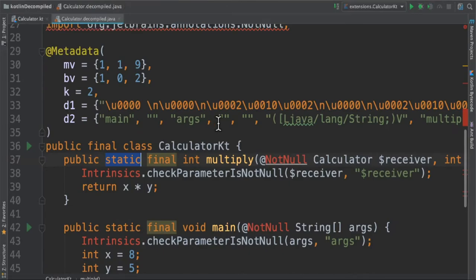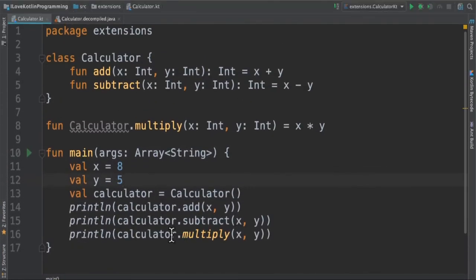I decompiled the code—you can see it has added a static method multiply with the logic. So from the main method we can call calculator.multiply as though it was part of the calculator class.